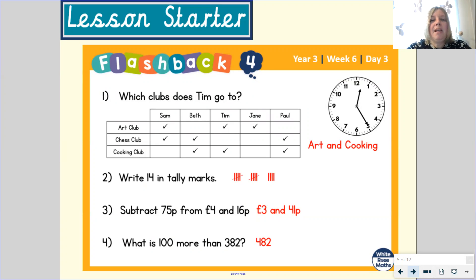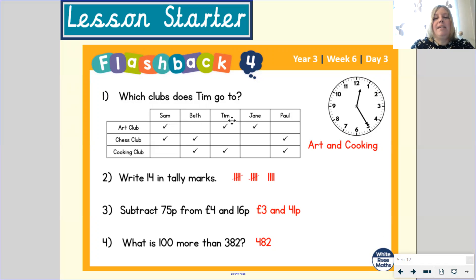Which clubs does Tim go to? If we look at the table, we can find Tim's name in one of the columns at the top. Here is Tim, and if we read down that column, we can see that Tim goes to Art Club. If we carry on reading down, we can see that he also goes to Cooking Club. So the clubs that Tim goes to are Art and Cooking.